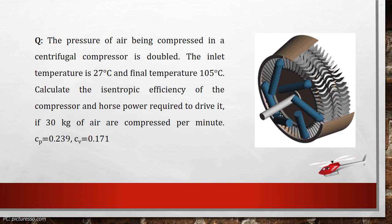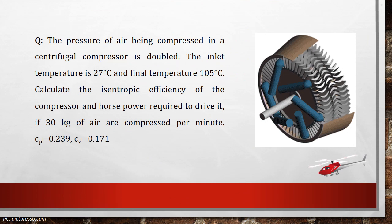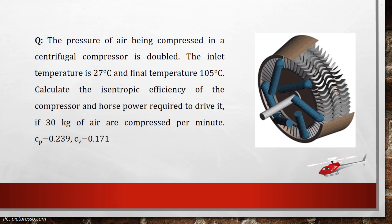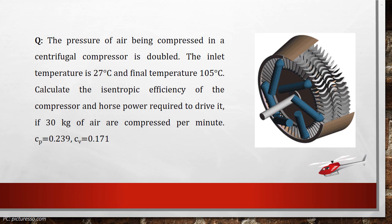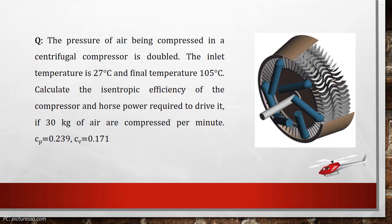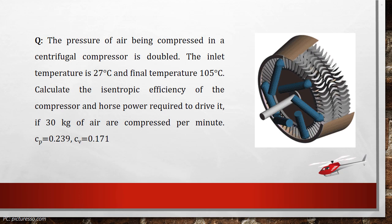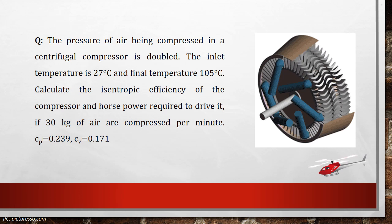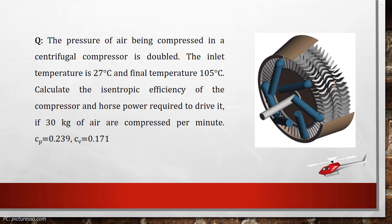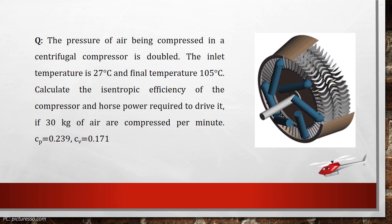Consider the pressure of air being compressed in a centrifugal compressor is doubled. The inlet temperature is 27 degrees Celsius and final temperature is 105 degrees Celsius. Calculate the isentropic efficiency of the compressor and horsepower required to drive it, if 30 kg of air are compressed per minute. C_P is equal to 0.239 and C_V is equal to 0.171.